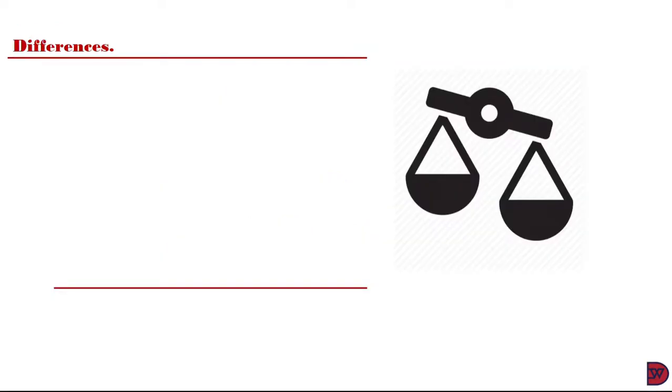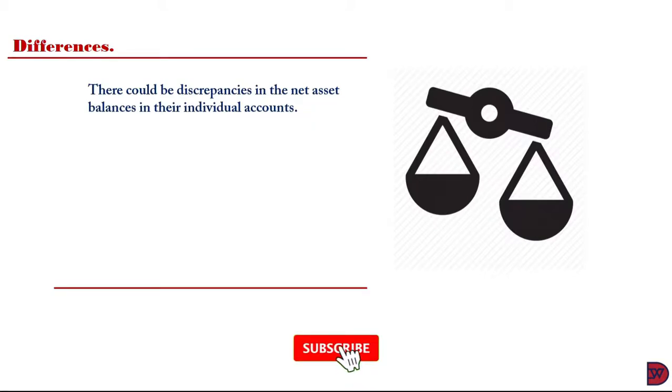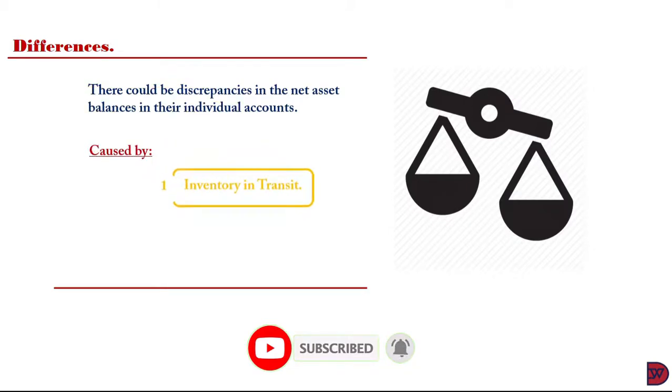Let's look at certain differences that arise with respect to receivables and payables balances. In the earlier discussions, the balances agree between the entities. There can be an instance where the amount the seller records as receivable from the buyer differs from what the buyer presents in its books as owing to the seller. This might be due to inventory in transit or cash in transit.